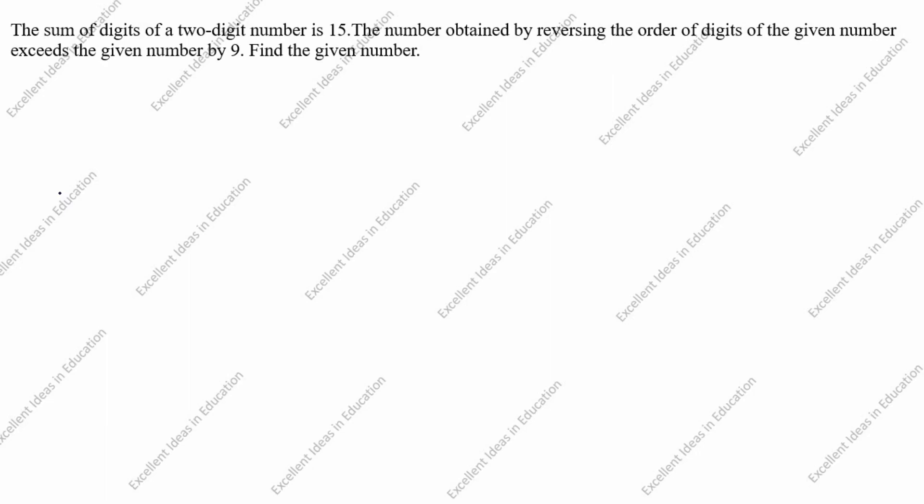Hi students! Welcome to my channel, Excellent Ideas in Education. Today we are going to solve this problem: The sum of digits of a two-digit number is 15. The number obtained by reversing the order of digits of the given number exceeds the given number by 9. Find the given number.